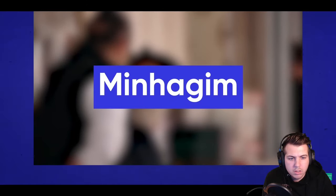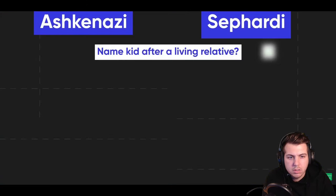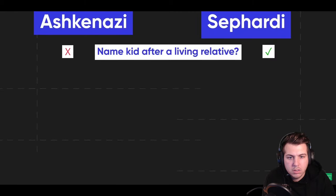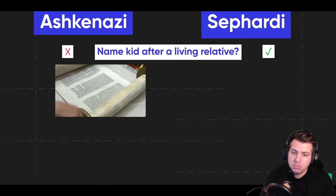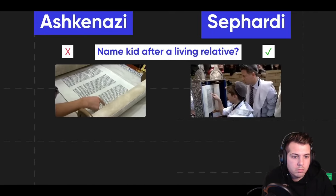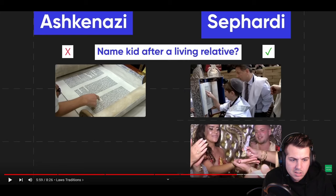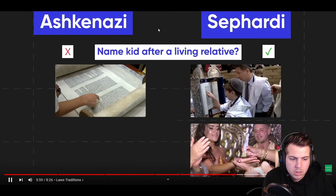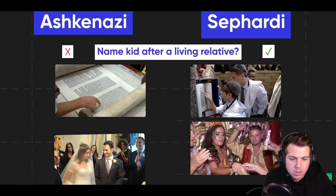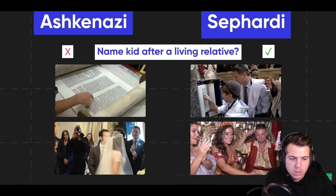Here are a couple of examples of rules that differ: Sephardic Jews will name a child after a living relative, whereas Ashkenazi Jews will only name a child after someone who has passed away. Ashkenazi Torahs look different from Sephardic ones — I think the difference might be just the case size. At weddings, only Sephardic brides traditionally get henna, and only Ashkenazi brides circle the groom seven times.